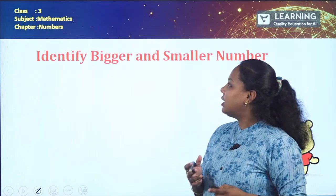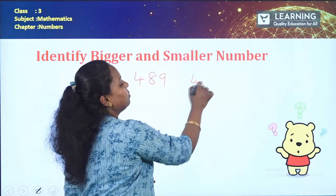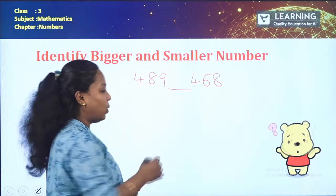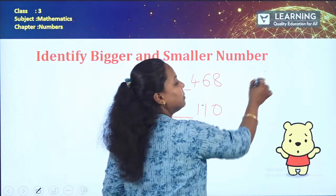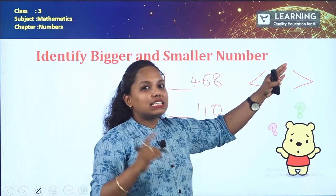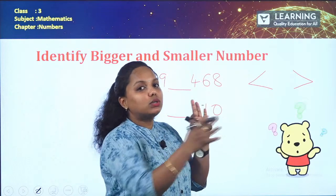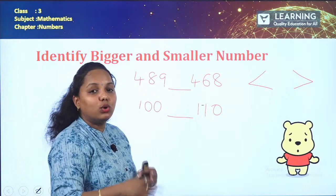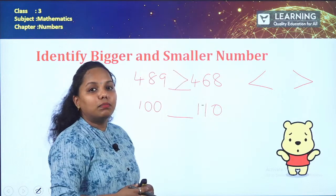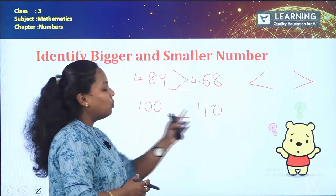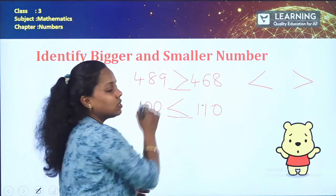Identify bigger and smaller numbers. For 489 and 468: the hundreds digit (4) is the same, so compare tens digits — 8 is greater than 6, so 489 is greater. Use the greater-than and less-than symbols. A trick: the symbol's bigger mouth points to the greater number. For 100 and 110: hundreds are the same (1), tens are 0 and 1 — so 110 is greater.